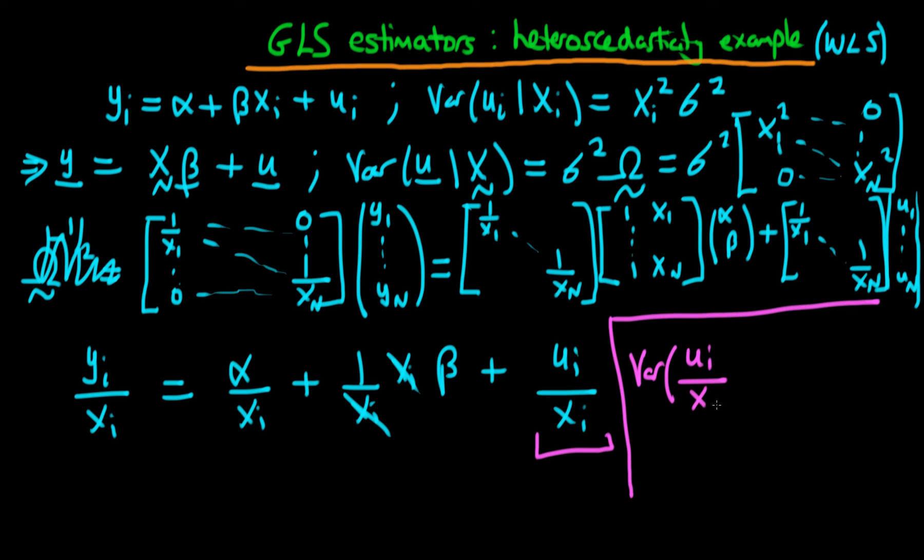So our transformed error is given by ui over xi, so I can evaluate its variance. So the variance of ui divided by xi, given that we have xi, is just equal to 1 over xi squared times the variance of ui given xi. And we've got a 1 over xi squared because we know that the variance of a constant number times a random variable, let's say b, is equal to the constant squared times the variance of the random variable, which in this case is b.